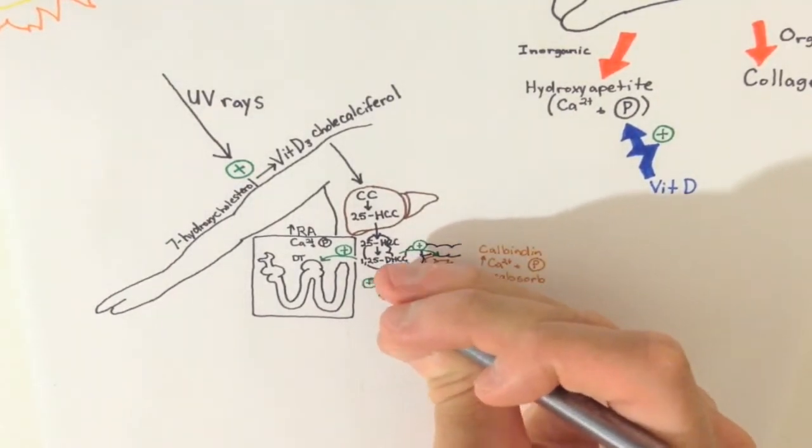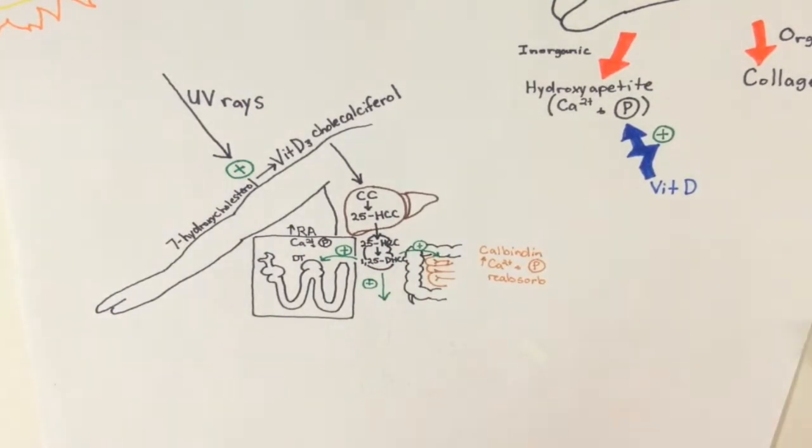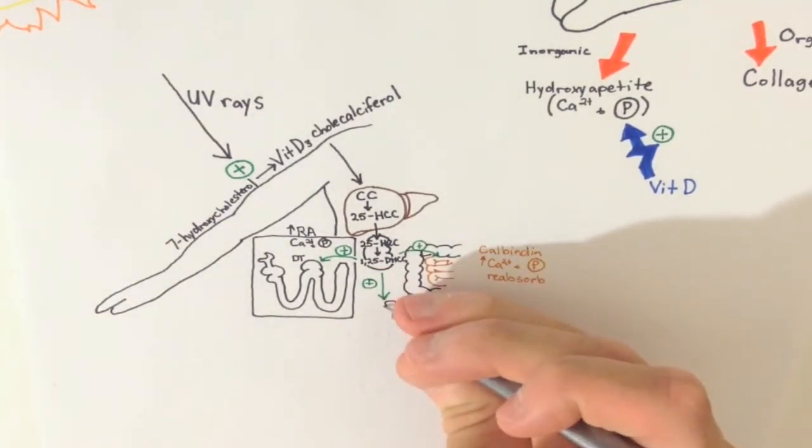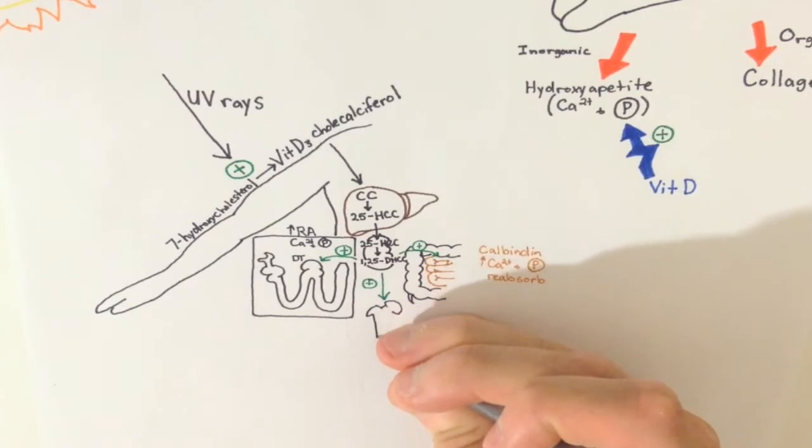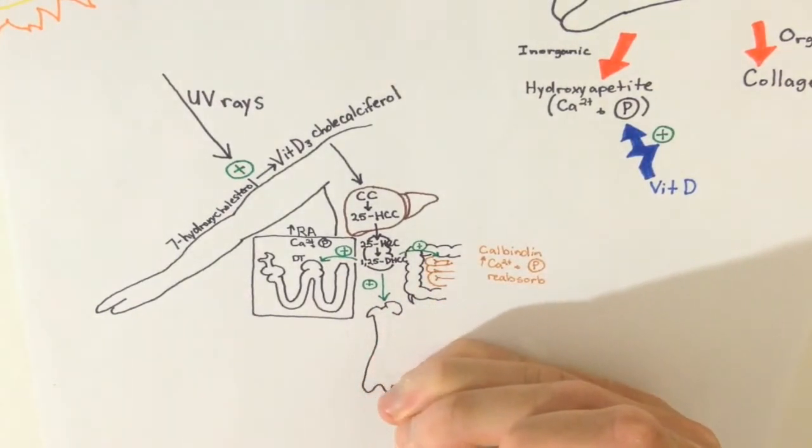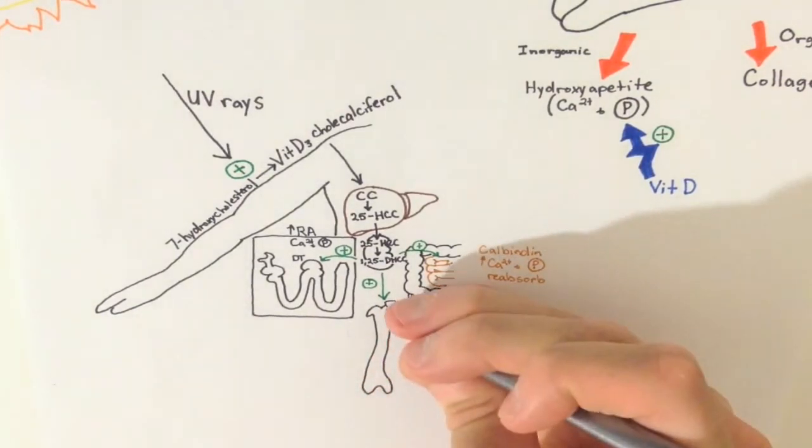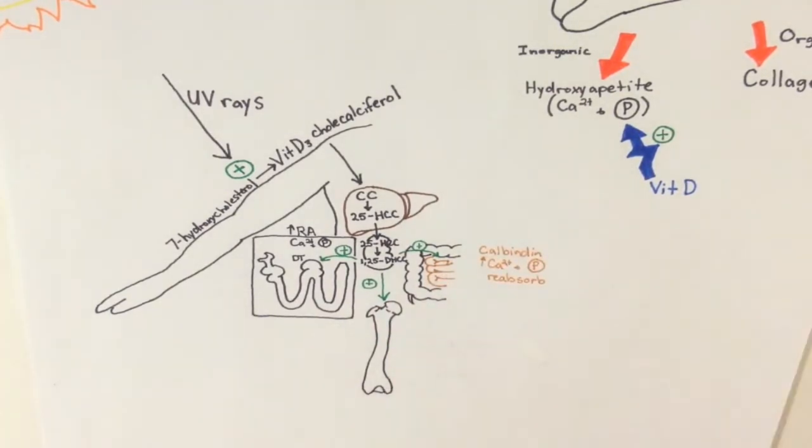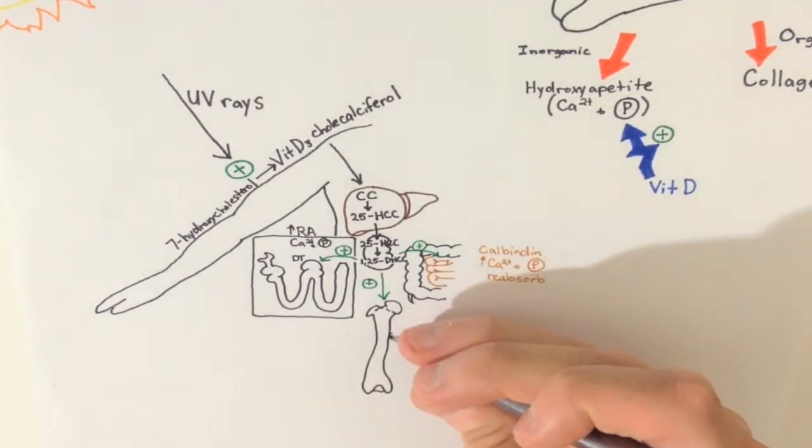And finally, vitamin D acts on the bones by stimulating osteoclast activity. But you're thinking, what? But osteoclasts break down bone. Well, when these osteoclasts break down bone, what is released? Calcium and phosphate.